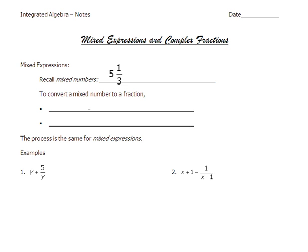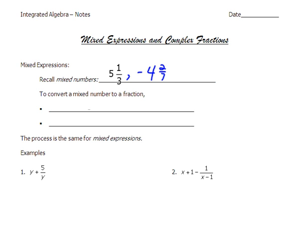We have to think back to mixed numbers when we talk about mixed expressions and complex fractions. Mixed numbers are a combination of an integer and a fraction — so five and a third. It's not exclusive to positive numbers either; we could have negative four and two-sevenths, or negative sixteen and eleven twenty-fifths. The easiest way to convert a mixed number into an improper fraction is to multiply the integer by the denominator and then add the numerator — so five times three is fifteen, plus one is sixteen thirds.